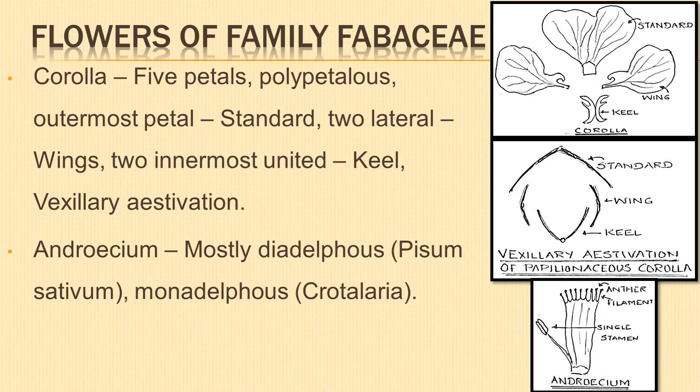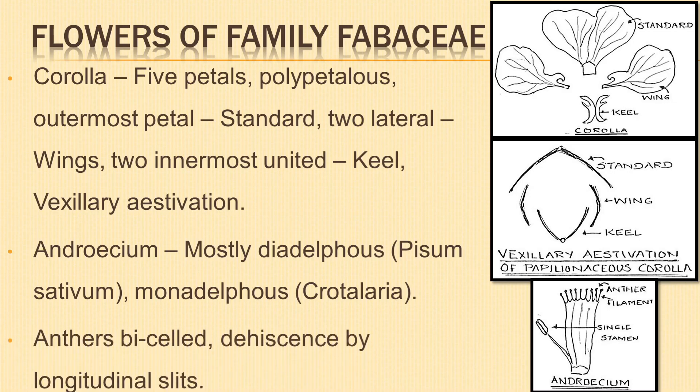The androecium, the male reproductive whorl, is composed of ten stamens, mostly diadelphous — filaments united into two bundles with anthers free, as in Pysum sativum. It is monadelphous in Crotillaria, where filaments unite into a single bundle but anthers are free. Anthers are bisect and dehiscence takes place by longitudinal slits.